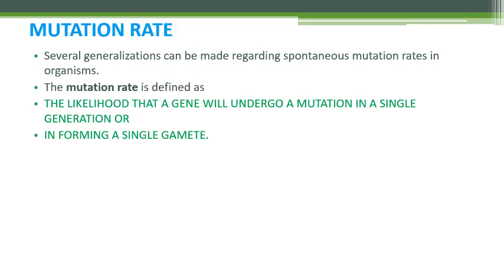Mutation rate can also be defined as the likelihood that a gene will undergo a mutation in forming a single gamete. These are the two scenarios: from one generation to the next, or in forming a gamete, because gametes are responsible for the formation of a new individual.